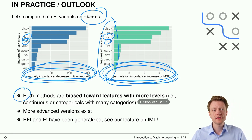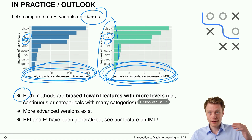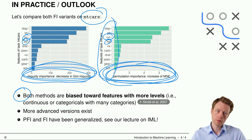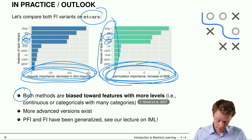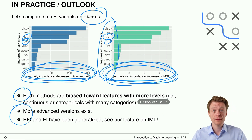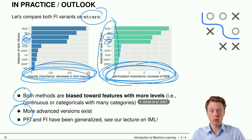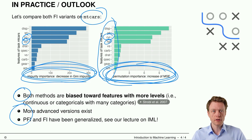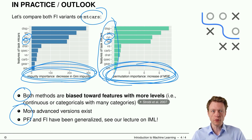One caveat: both methods are biased towards features with more levels. If you have categorical features with many categories, they tend to get higher feature importance values in both methods. As a small outlook, there are more advanced versions — permutation feature importance and impurity feature importance can be generalized, and there is a whole lecture on interpretable machine learning covering details of all these feature importance measures and others proposed in the literature.